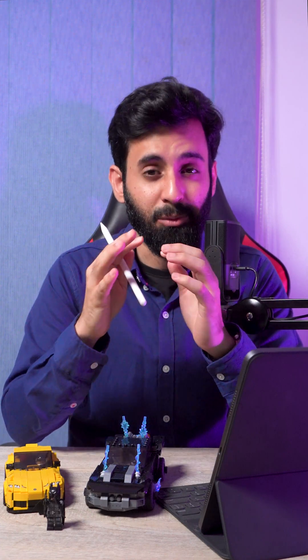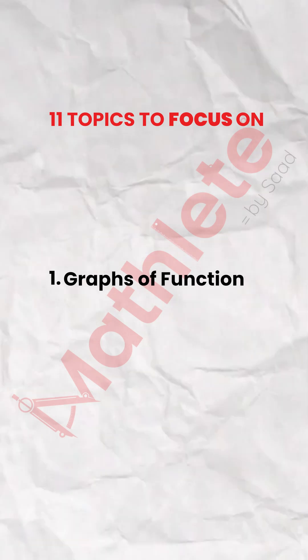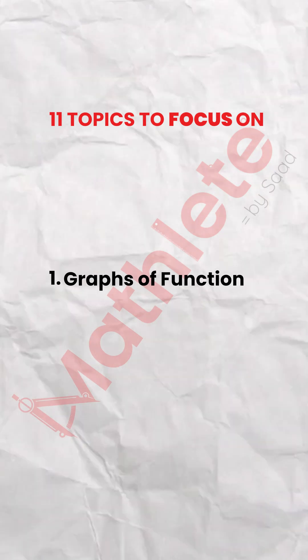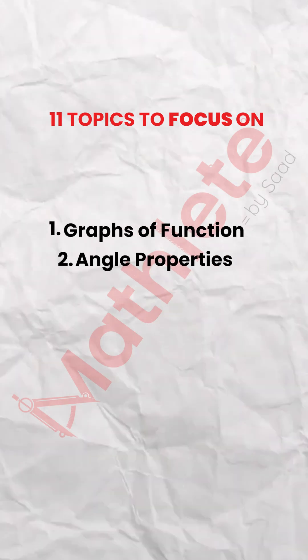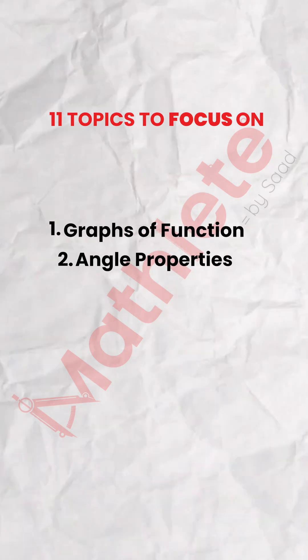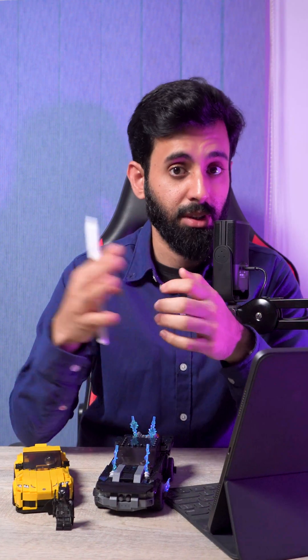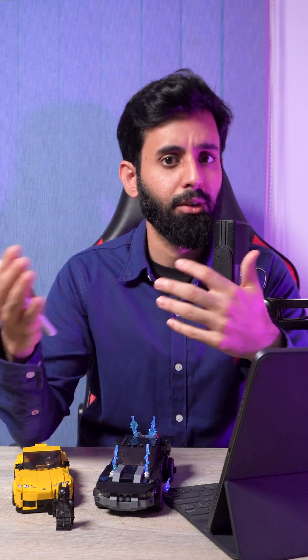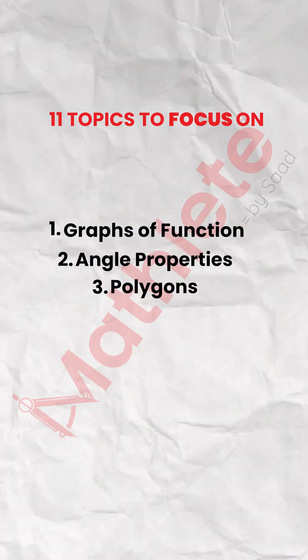Now let's talk about paper two. These are the topics that weren't tested at all — please feel free to correct me if I'm wrong. Number one is graphs of functions, which is a main paper two topic, so you can expect a question on that for around 10 to 12 marks. Then you have angle properties of circles — as per my understanding there was no question on that, so be mentally prepared for a question on angle properties of circles in paper two, which may be slightly more complex than a typical paper one question.